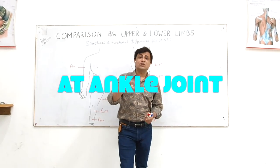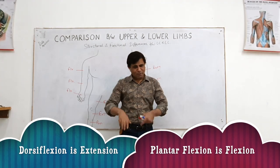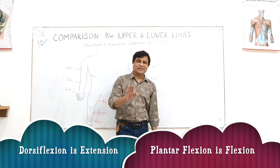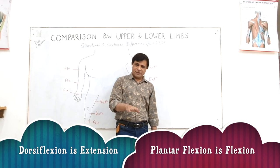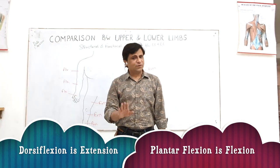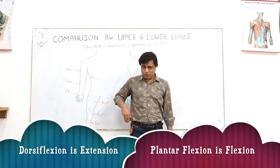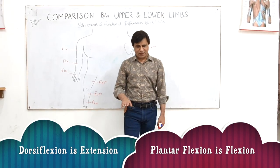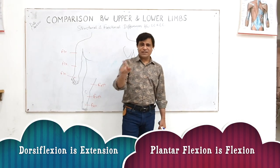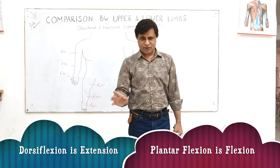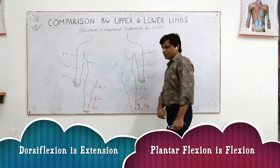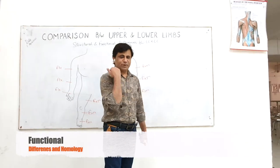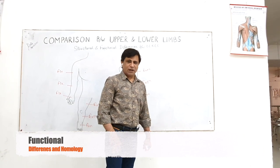Dorsiflexion is a better word for extension of the ankle joint. Plantar flexion is actually flexion. So in the upper limb, anterior movement is flexion. In the lower limb, the muscles are causing flexion behind, except at the hip joint. All the joints — knee, ankle — flexion occurs behind in the lower limb.